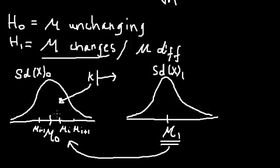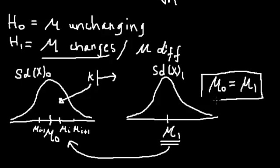The best way to know is we need to check if mu 0 is equal to mu 1. We need to check that.